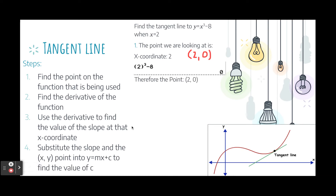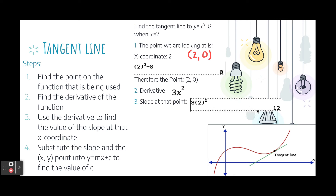The next step is to find the derivative. The function is x cubed minus 8, so the derivative is 3x squared. We use the derivative function to find the slope at the point (2, 0). Replacing x with 2 in the derivative gives us 3 times 4, which equals 12. Therefore, the slope of the tangent line is 12 at this point.